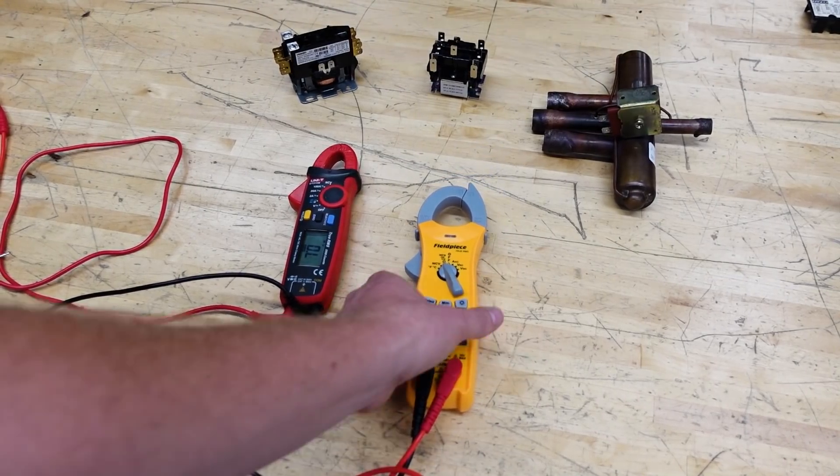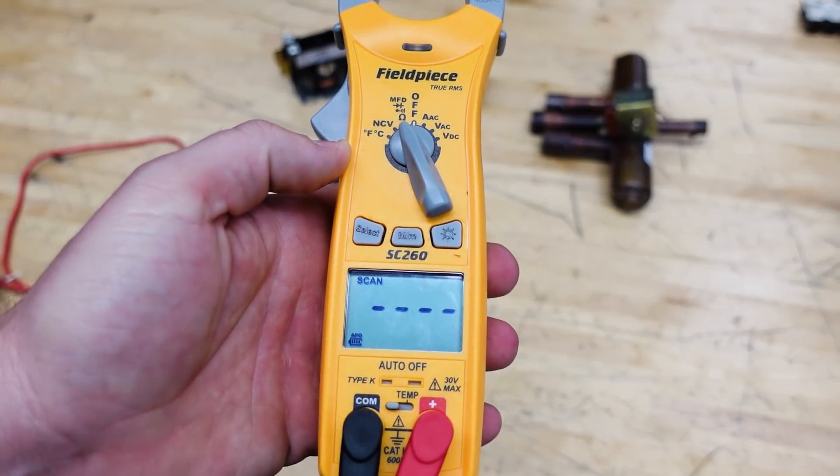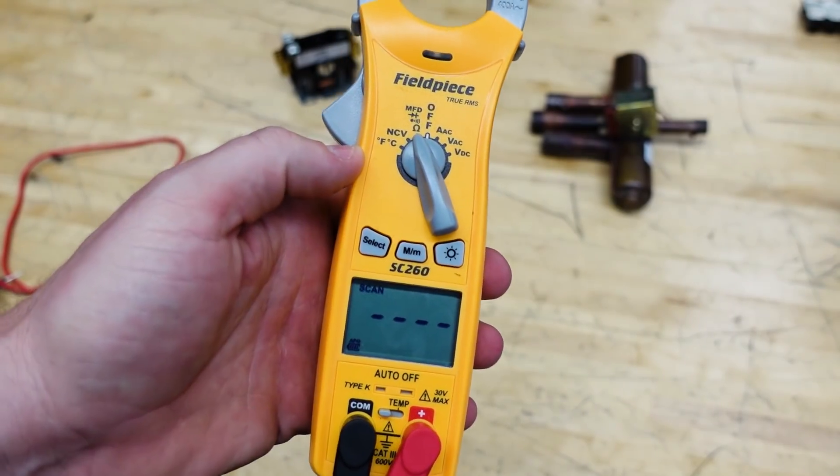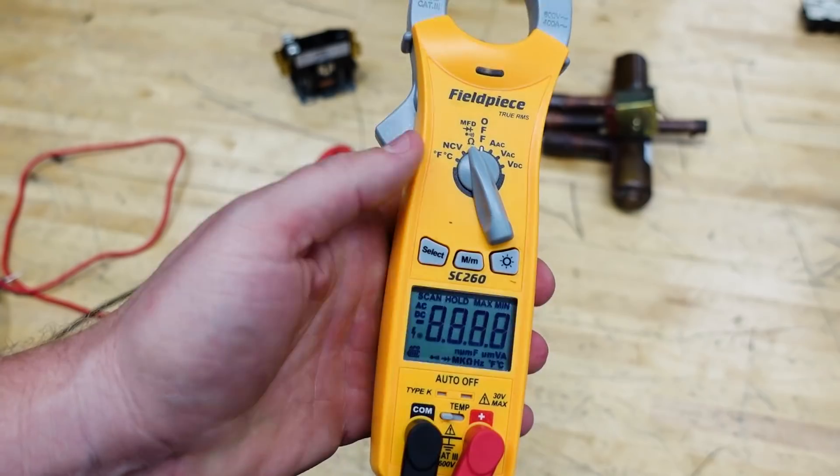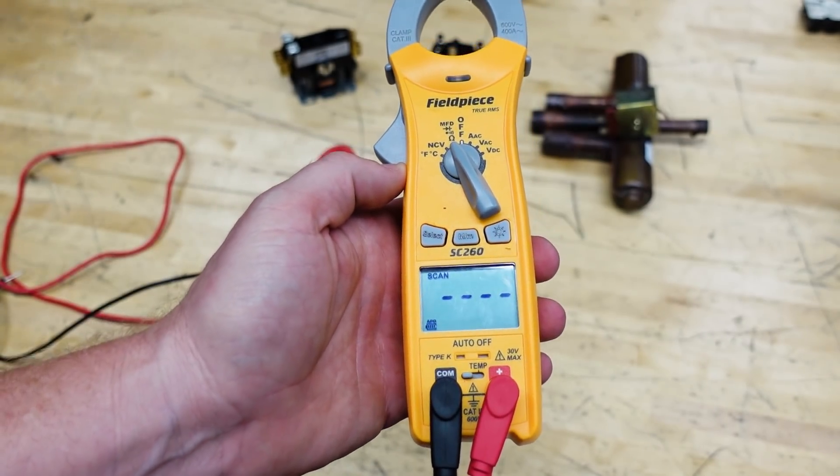All right, so I'm going to talk about the ohm setting on the meter, because it's one of the ones that is underutilized, and then when it is utilized, it can sometimes be utilized wrong.